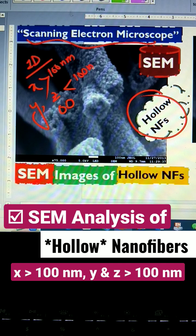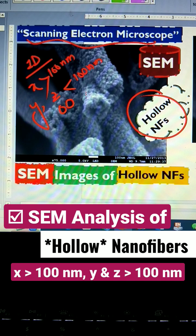I also explained that SEM is just like our eyes — our eyes see bigger things, but SEM sees smaller things. You can see it tells us about the shape; it can give us the shape, the size, the pores, and so on.